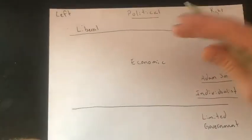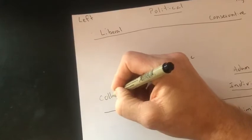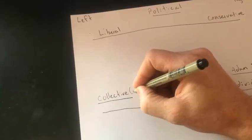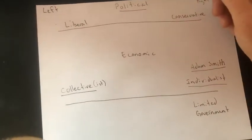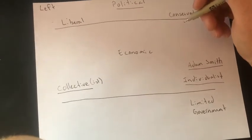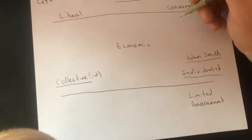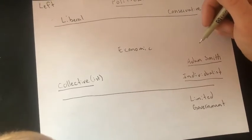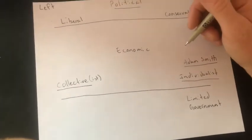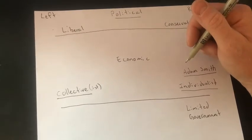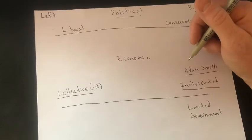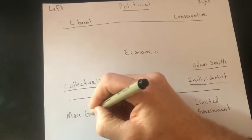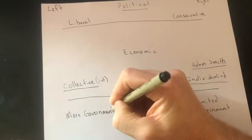Now we're going to move over to the collectivist side. To be a collectivist means that you believe it's important that sometimes we need to think about the needs of the group — even sometimes more than the needs of the individual. Sometimes individuals' ability to act in their own interest can be sacrificed for the good of the group. The best way to make sure that everybody has some level of goodness in their lives is to have the government step in and create greater equality. So collectivists believe in more government.